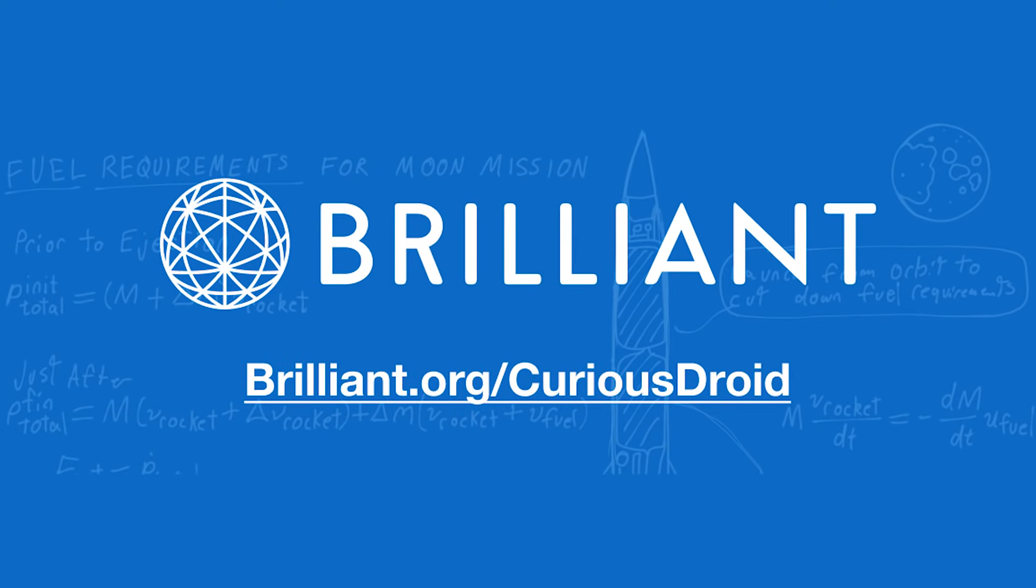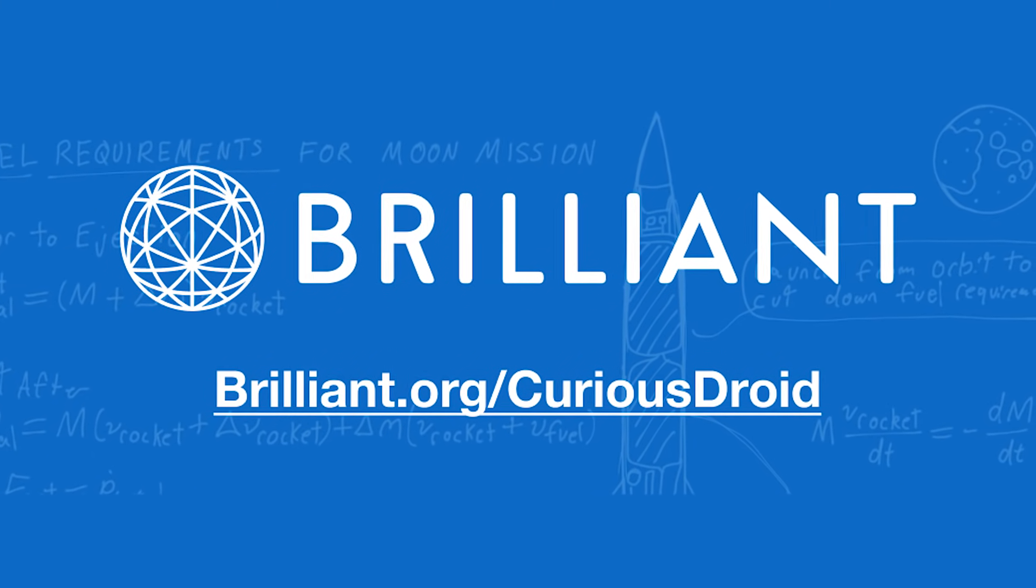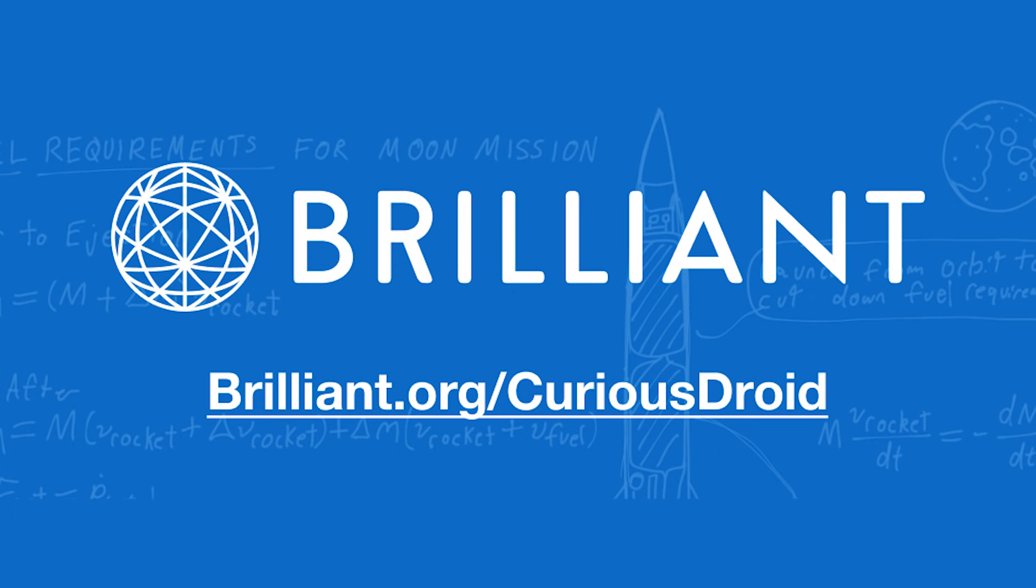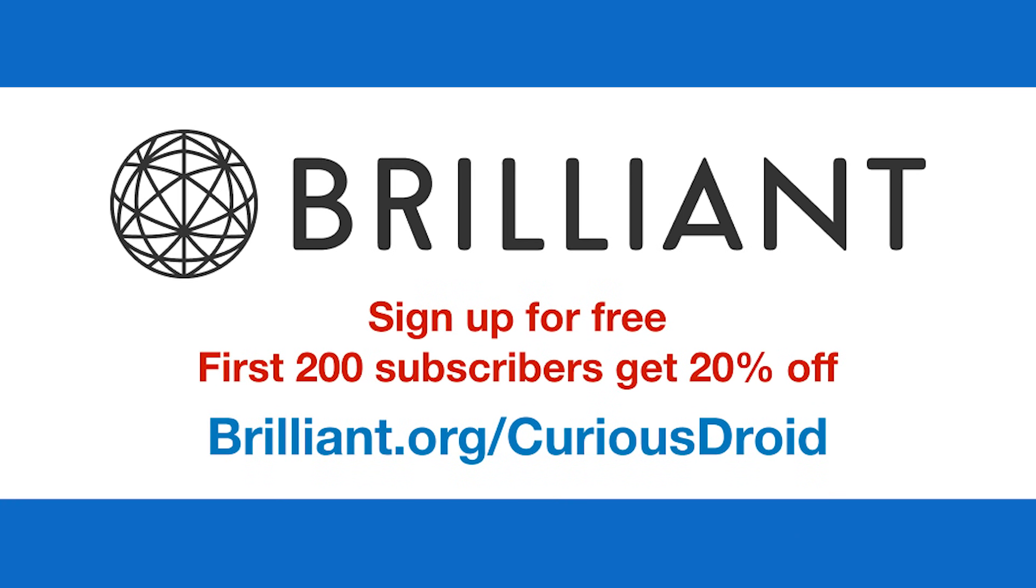To help support us at Curious Droid and to learn more about Brilliant, just click on the link to brilliant.org/CuriousDroid and sign up for free. As a special bonus for Curious Droid viewers, the first 200 people to sign up will get a 20% discount off of their annual subscription.